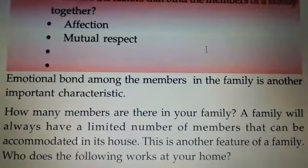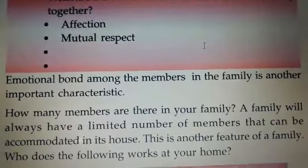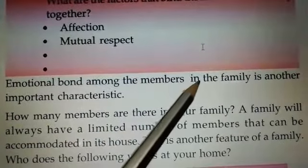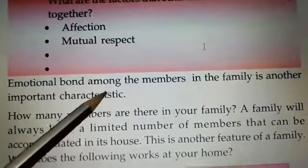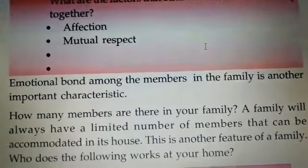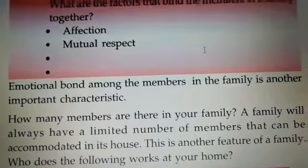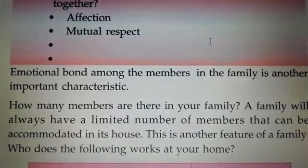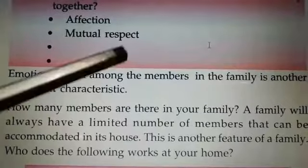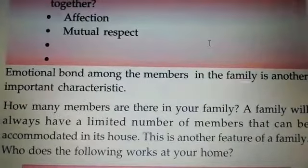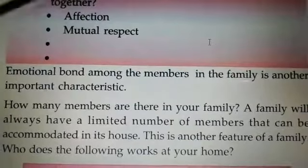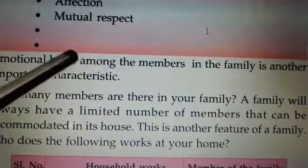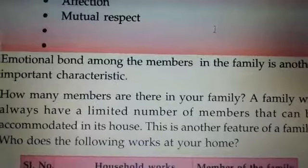Emotional bond among the members of the family is another important characteristic. Emotional bond means Vaigarhika maya benda. This is the second characteristic of a family. The first is family is universal; the second is emotional bond. Emotional bond includes affection, mutual respect, cooperation, security, discipline, polite behavior, attitude to share, etc.